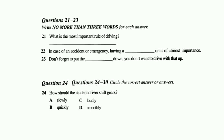Remember, the most important rule of driving: safety first. There are some steps to follow. First, you should put on your seatbelt — you should always remember to do that. In case of an accident or emergency, having a seatbelt on is of utmost importance. Okay, I have my seatbelt on. Now what should I do?